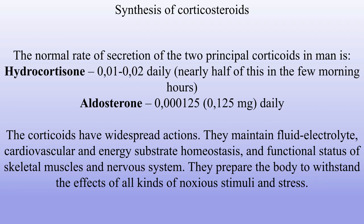Synthesis of corticosteroids. The normal rate of secretion of the two principal corticoids in men is hydrocortisone 0.01 to 0.02 daily, nearly half of this in the few morning hours, and aldosterone 0.125 mg daily. The corticoids have widespread actions. They maintain fluid electrolyte, cardiovascular, and energy substrate homeostasis, and functional status of skeletal muscles and nervous system. They prepare the body to withstand the effects of all kinds of noxious stimuli and stress.